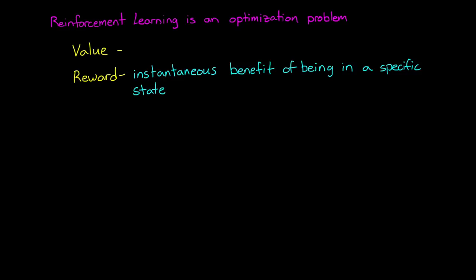Now, at its heart, reinforcement learning is an optimization problem, but there are some very interesting concepts that set reinforcement learning apart from other optimization techniques. First is the idea of value. Reward is the instantaneous benefit of being in a specific state, whereas value is the total reward that an agent can expect to collect from that state and onwards into the future.